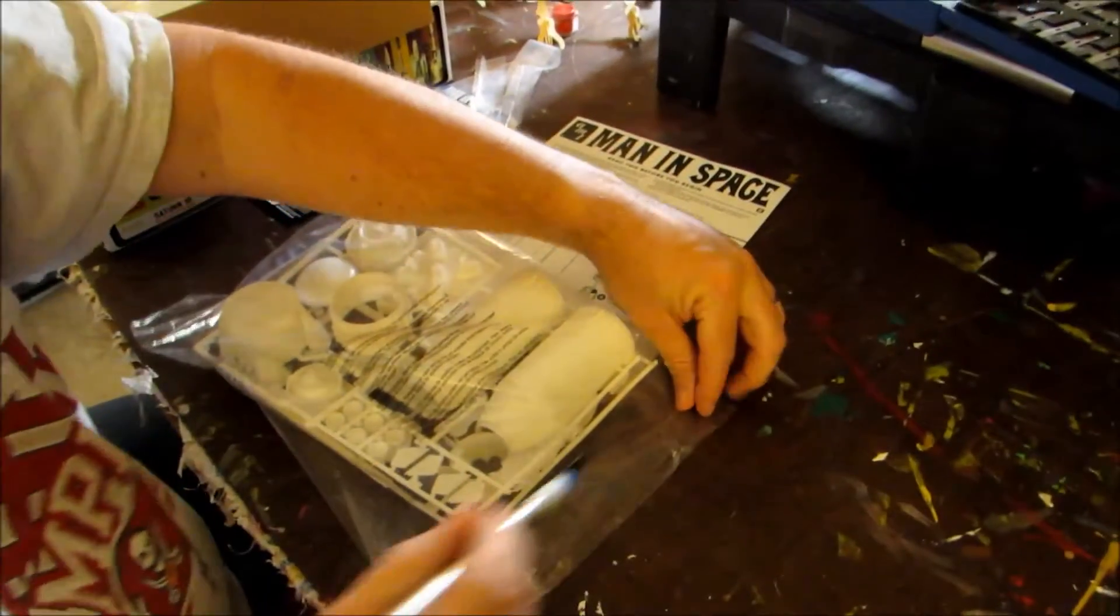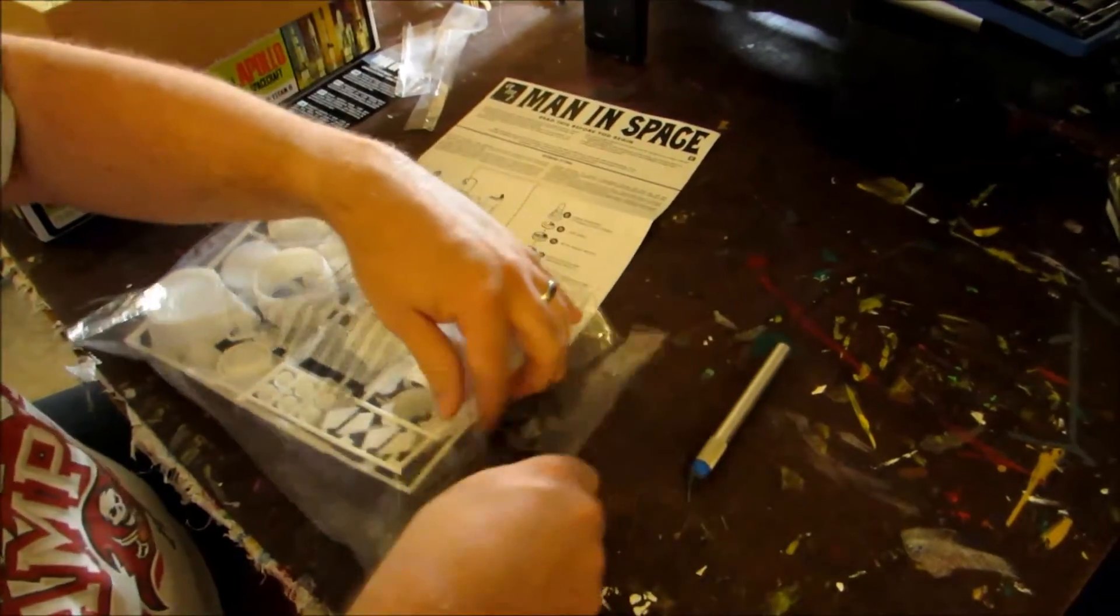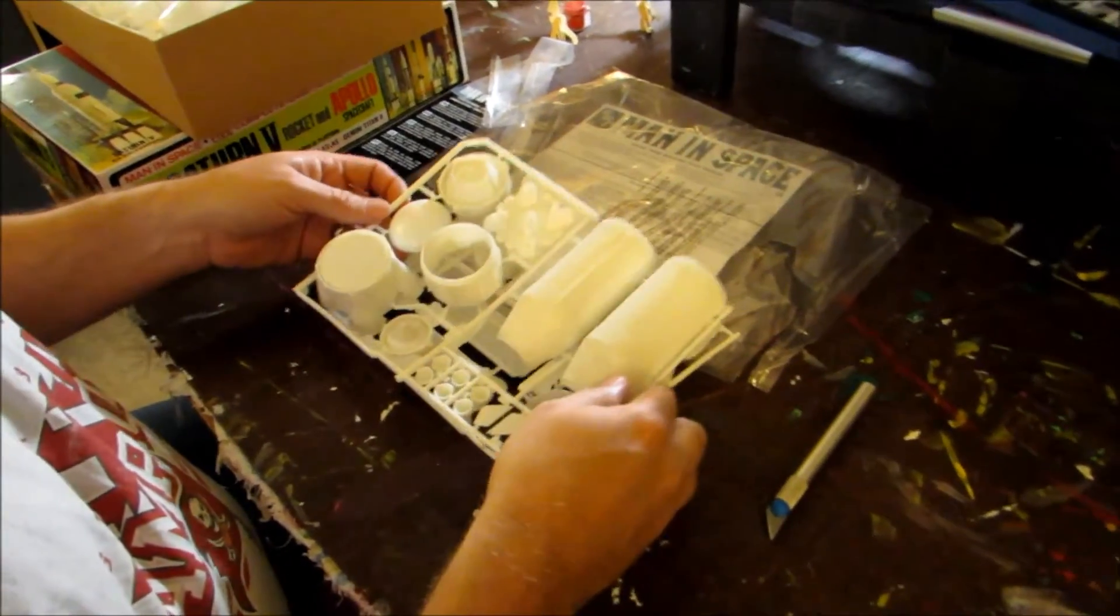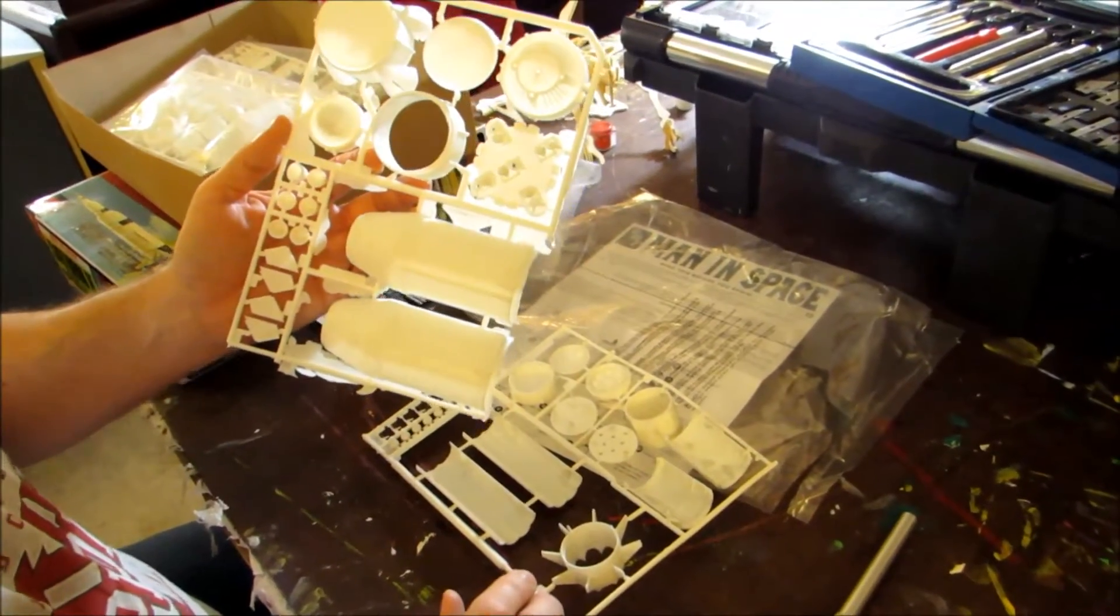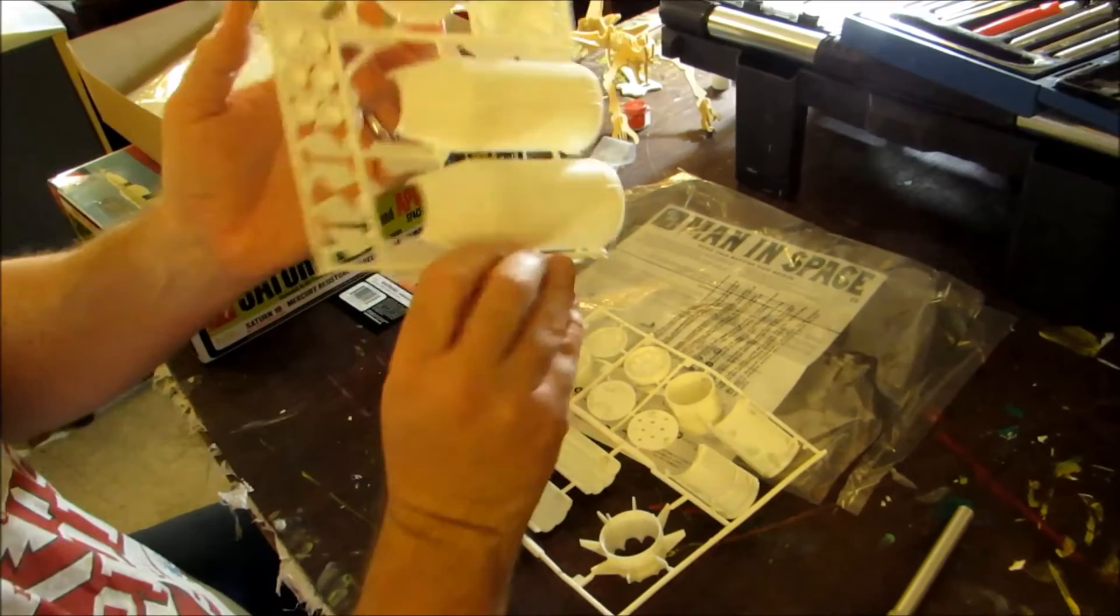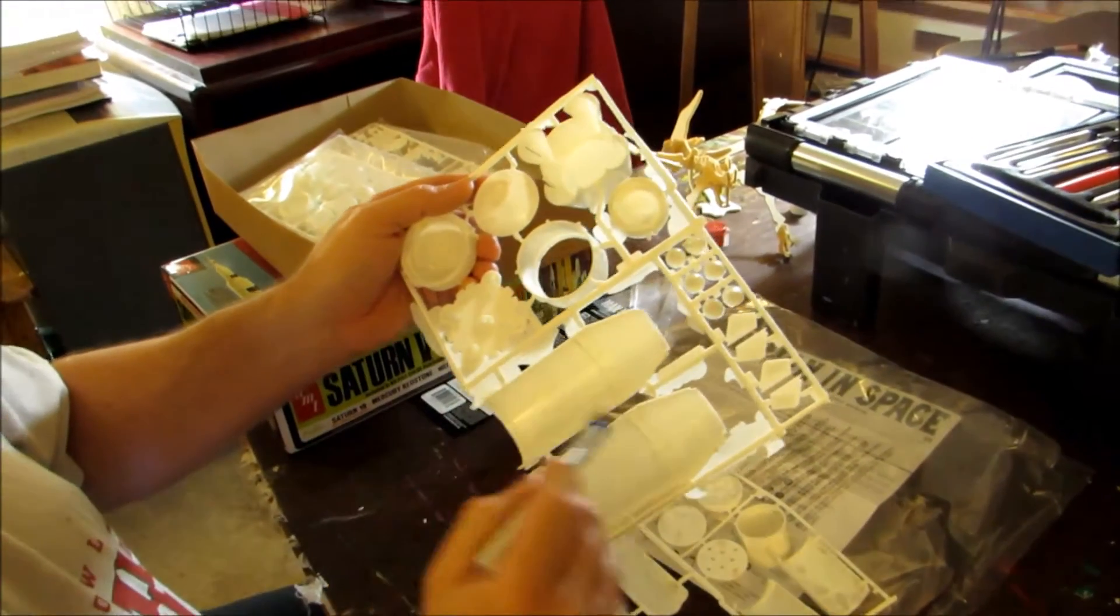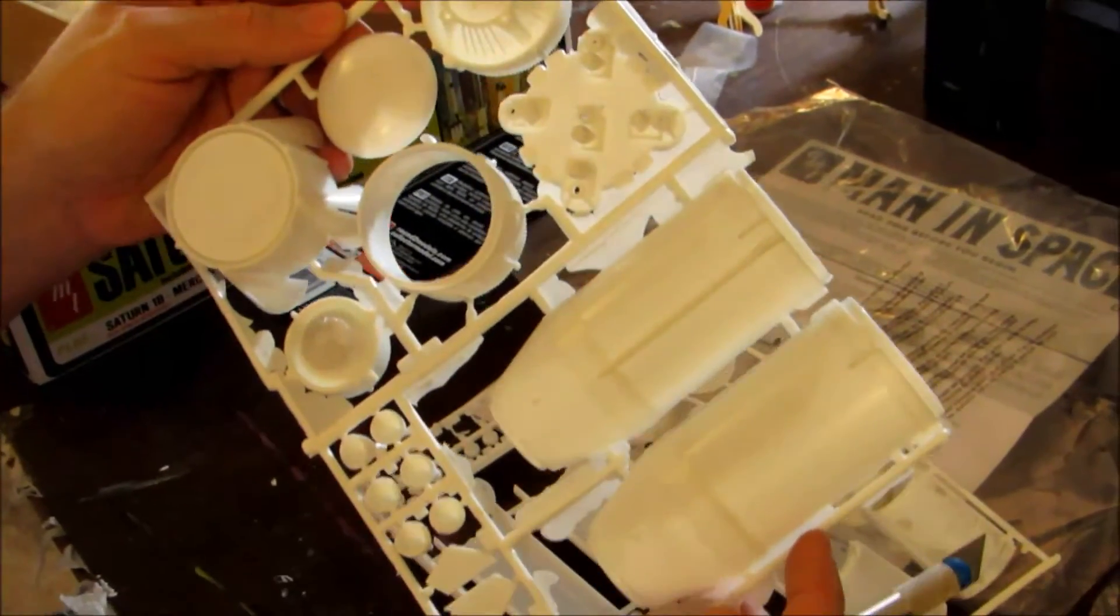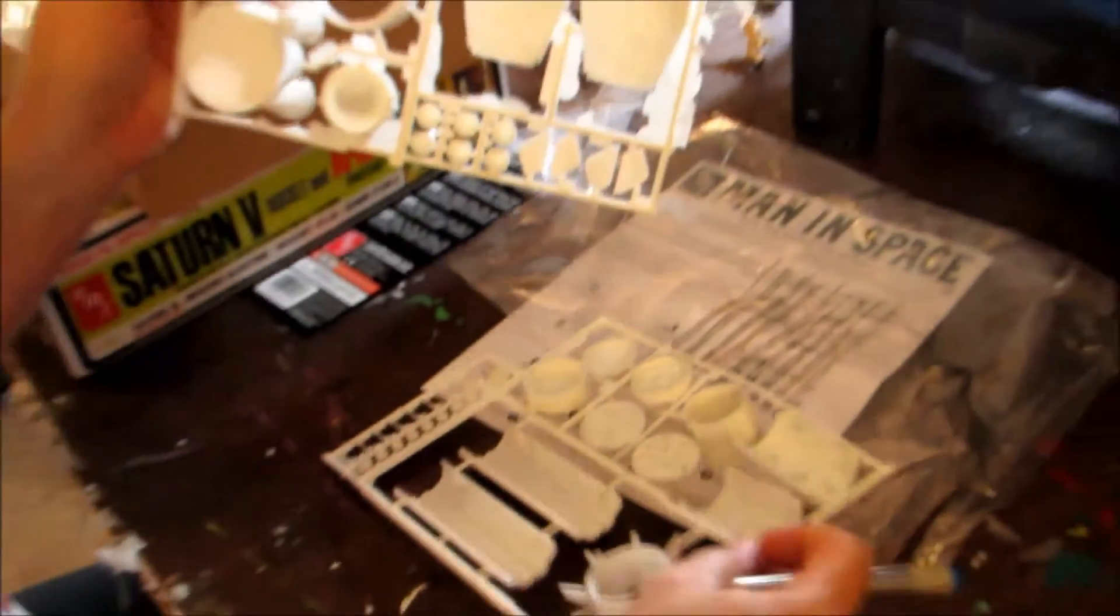And then the final bag. The final bag carries the lower area for the Saturn rockets. Again, you can see there's a lot of stuff that's going to need to be trimmed off. But, when you consider that this is on the average $6 per rocket, it's actually not a bad price at all.